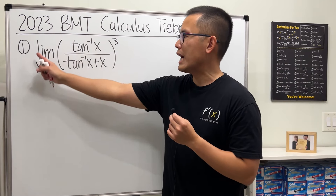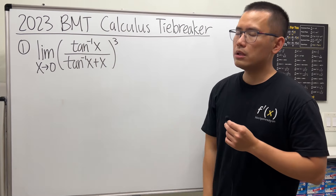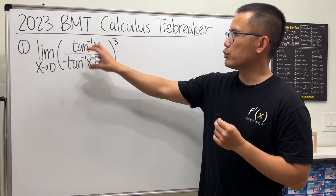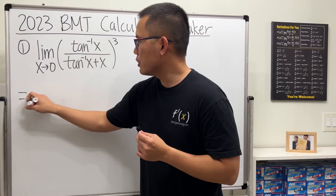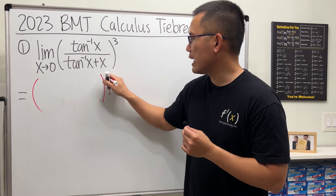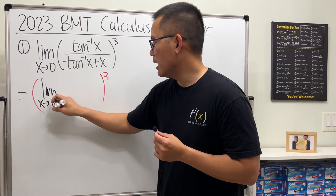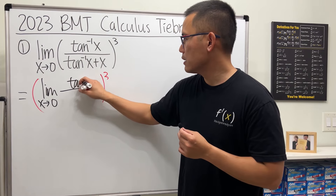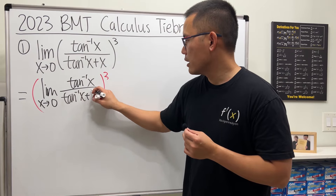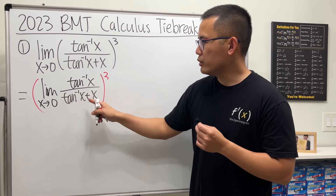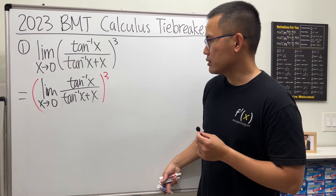For the first question, we have to compute this limit. Notice we have this to the third power. And because x to the third power is a continuous function, we can actually just put the third power on the outside and focus on taking the limit on the inside first. Then notice, if you put 0 into all the x's, we will get 0 over 0. That's good, because we can use L'Hôpital's rule.